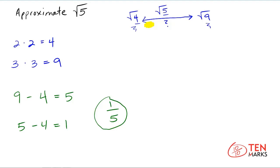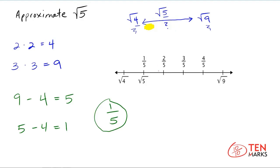Let me show you this on a number line. Here, the distance between the value of the square root of 4 and the square root of 9 has been divided into 5 equal sections, marked by fractions. You've determined that the square root of 5 is going to be one-fifth greater than the value of the square root of 4. If you find the decimal value of one-fifth, you get 0.2. So the square root of 5 is about 0.2 greater than the square root of 4, and since the square root of 4 is 2, we approximate the square root of 5 to be 2 plus 0.2, which is 2.2.